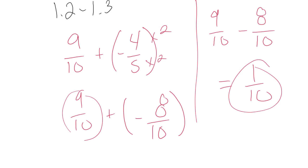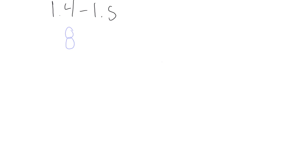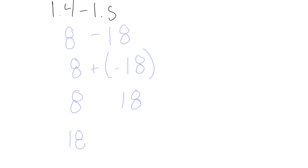Now 1.4 and 1.5 — subtracting integers and rational numbers. When you're subtracting, the first step is to just rewrite it as an addition problem, then solve it like we've been doing. For example, positive 8 minus 18 becomes 8 plus negative 18. Different signs: absolute values are 8 and 18. Subtract — 18 minus 8 is 10. Keep the sign from the greater number — negative 10 is the answer. You could also imagine a number line: you're at 8, subtract 18, that takes you to negative 10.